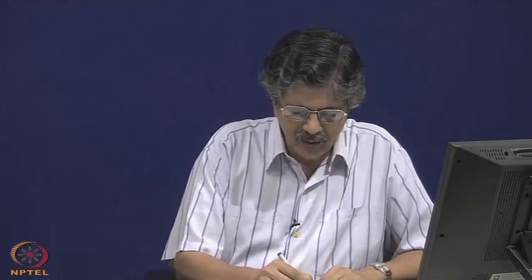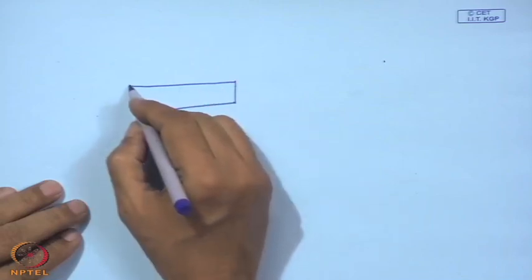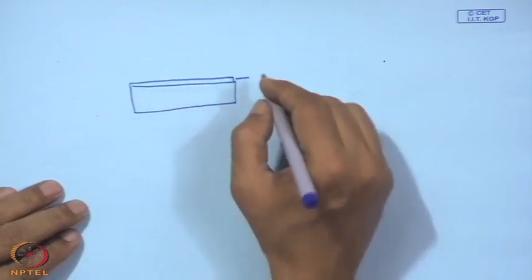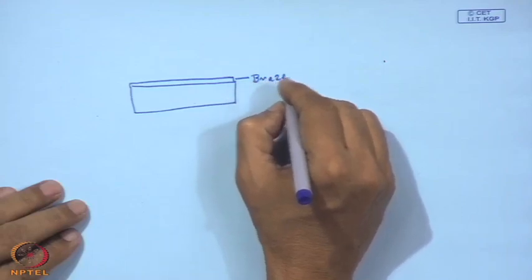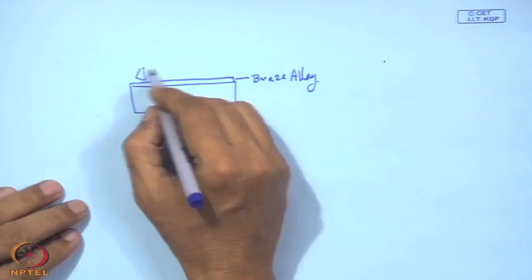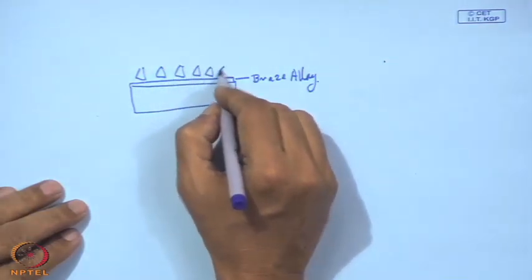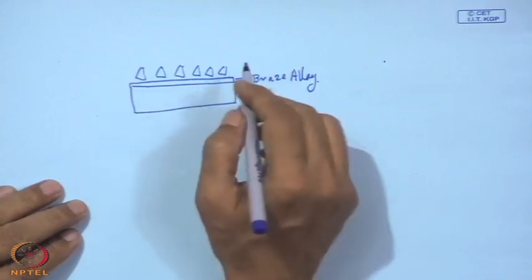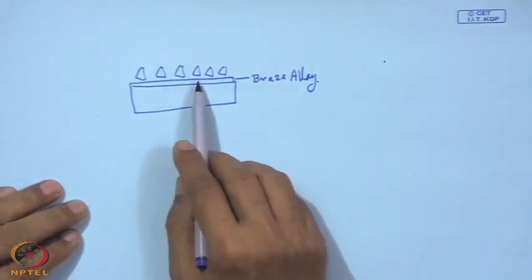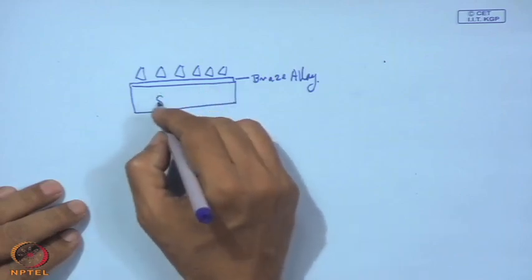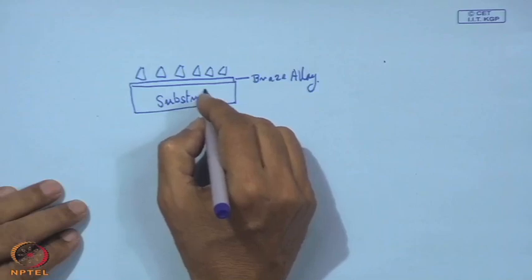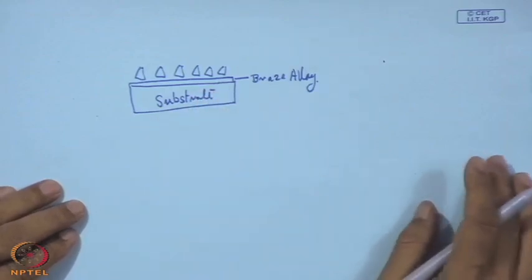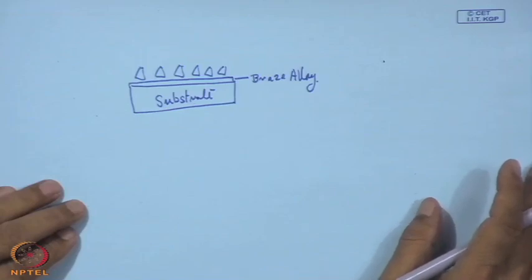Ordinarily, we have a substrate, then we put one layer of braze alloy, and over that we put the grits. This is a temporary attachment and later, just by wetting and bonding, these grits are anchored and bonded to the substrate. Here we would like to show a technology for making such products in a very reliable manner.